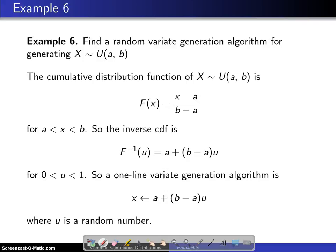Here is the last example concerning the uniform distribution. Find a random variate generation algorithm for generating a random variate x which has the uniform distribution with parameters a and b.